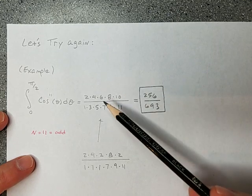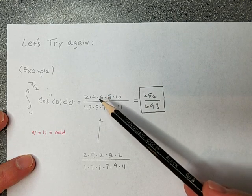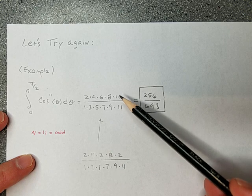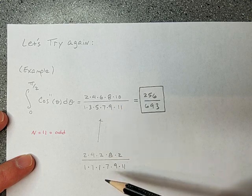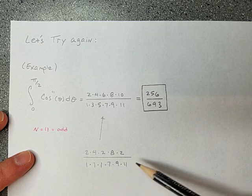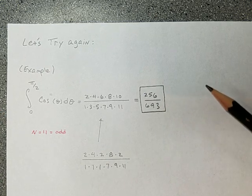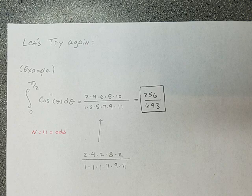And I did some canceling, like the 6 right there I could cancel with the 3, it'd leave me a 2, and the 10 I can cancel with the 5, and it would leave me a 2. So I got that, and then I put all that together, 256 over 693, that's what you get. It's very easy to do it that way.